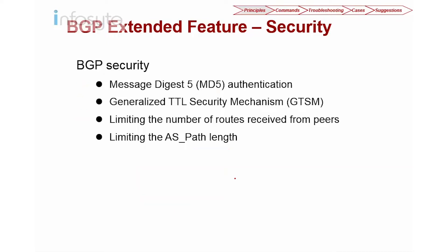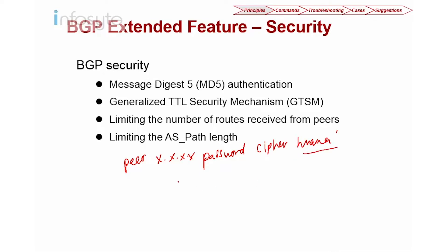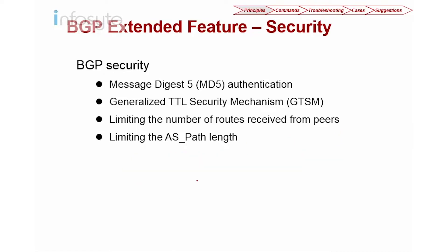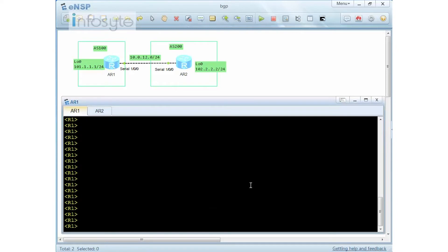To configure MD5, the command is straightforward: use 'peer [IP address] password [password]'. This is the command to configure MD5 authentication on Huawei. In this demonstration, I'm going to show how MD5 authentication works in BGP.